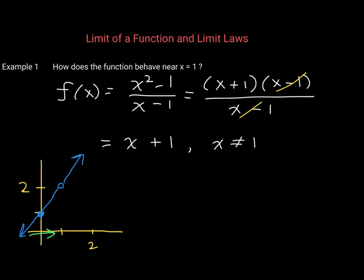As x values approach 1 from the left, the function values are approaching 2. So to answer the question, the function values are getting closer and closer to 2. We know that at the point (1, 2) the function is undefined, but we can make the values of f(x) as close as we want to 2 by choosing x close enough to 1. As long as you choose a value for x really close to 1 on either side, your function value will be close to 2.